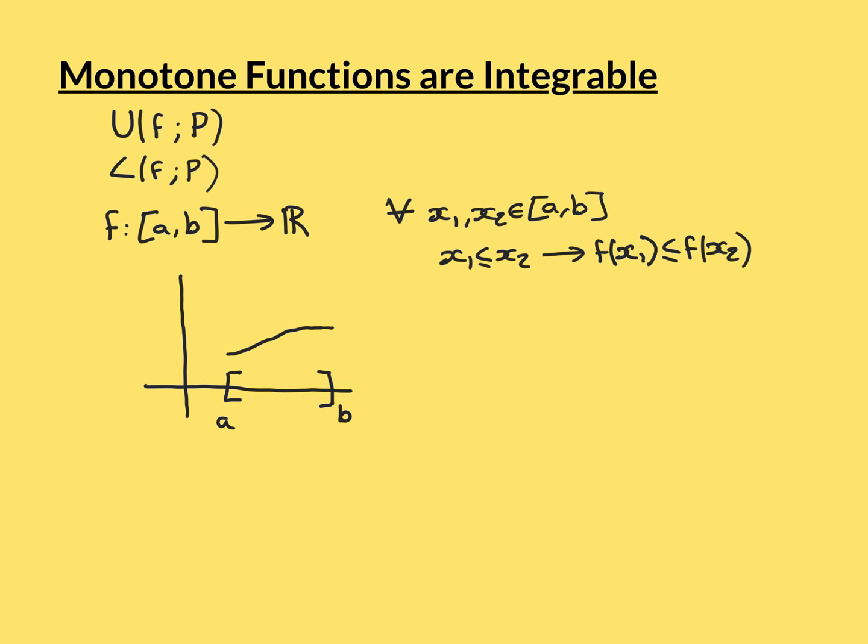Note that if we call the function strictly increasing, that's a stronger criterion — the function has to go up; it can't stay level. But monotonically increasing is slightly weaker than that. It says the function can either stay the same or go up, but it never goes down. That's what I've drawn here.